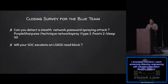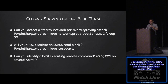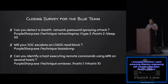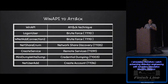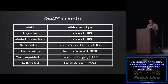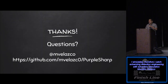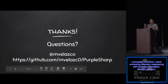Closing summary for the blue team: how do you know if you can detect a stealth network spray attack? Just run Purple Sharp and you'll know. Do you know if your SOC will escalate an LSASS read block? Run this and you'll know. Can you identify a host executing remote commands using WMI in your network? Just use this and simulate it safely. I also mapped Windows 32 API calls to MITRE ATT&CK techniques, and I want to keep working on this — I think it will add extra value to the simulations.